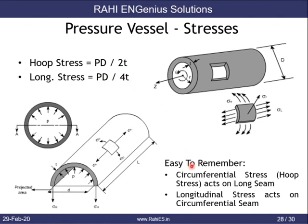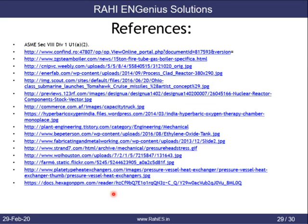To remember which stress acts on which seam: circumferential stress (hoop stress) acts on the longitudinal seam, meaning it acts on the face aligned along the vessel's length. Longitudinal stress acts on the circumferential seam, meaning it acts on the face perpendicular to the vessel's axis. These are the references used in this presentation.